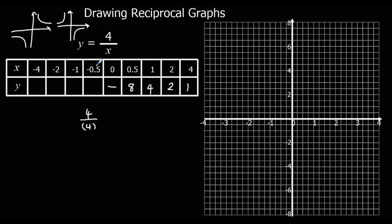4 divided by minus a half gives us minus 8 — this is why it's flipped over. 4 divided by minus 1 is minus 4. 4 divided by minus 2 is minus 2. And 4 divided by minus 4 is minus 1.